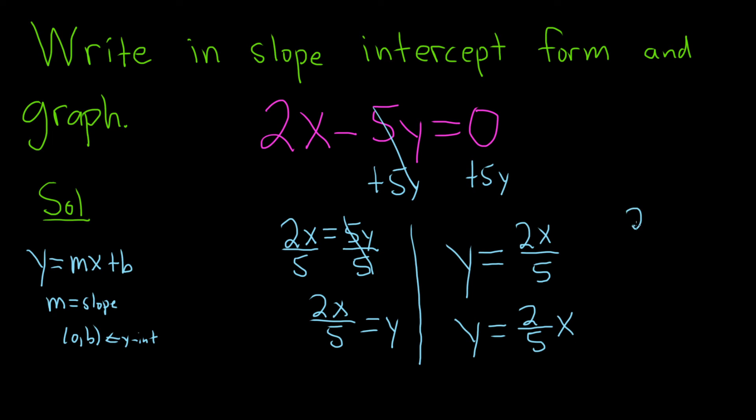Because you're really multiplying it by x over 1, and that's the same thing as x. When you do that, you do 2 times x, which gives you 2x on top. And 5 times 1 gives you 5 on the bottom. So two-fifths times x is the same as 2x over 5.